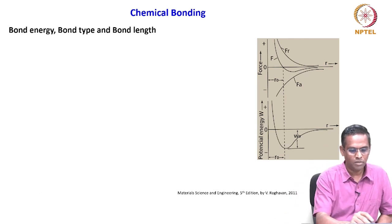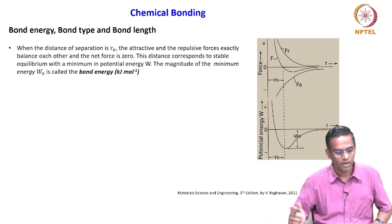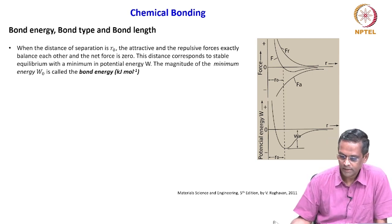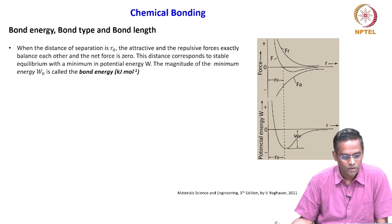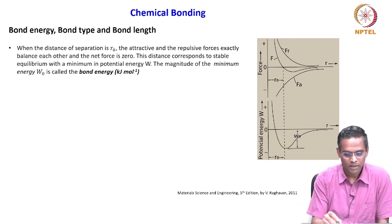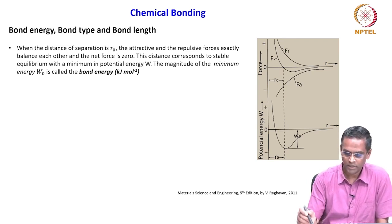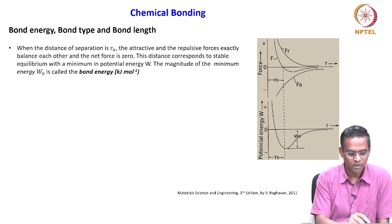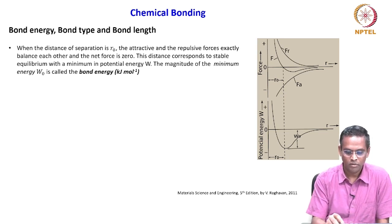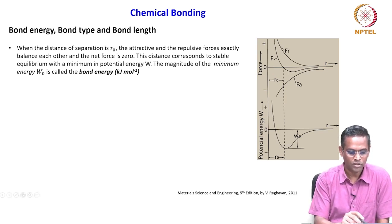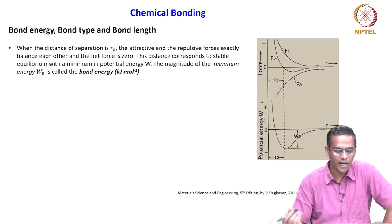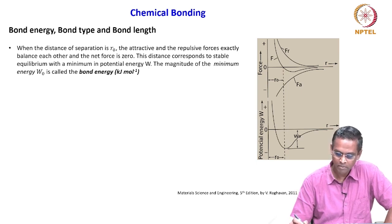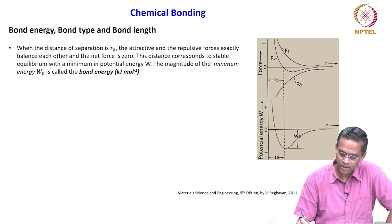We will look at bond energy, bond type, and bond length. When the distance of separation is R₀, the attractive and repulsive forces exactly balance each other and the net force is zero — the distance corresponds to stable equilibrium with a minimum in potential energy. The magnitude of the minimum energy W₀ is called bond energy, measured in kilojoules per mole.